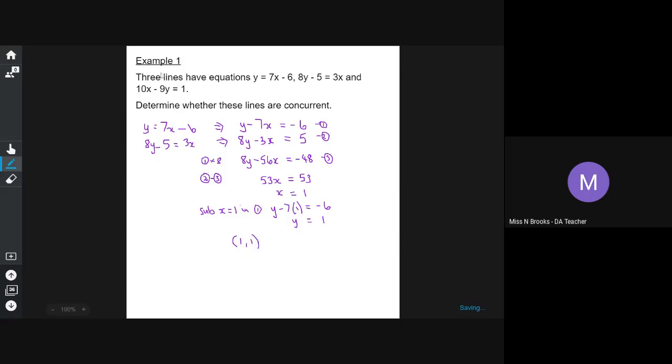Now we need to work out whether this third line is concurrent. So we're going to sub 1, 1 in 10x minus 9y, and hopefully it's going to equal 1. And if it does, then it's concurrent, and if it doesn't, then it isn't concurrent. So 10 times 1 minus 9 times 1 does equal 1. Therefore, lines are concurrent at 1, 1.